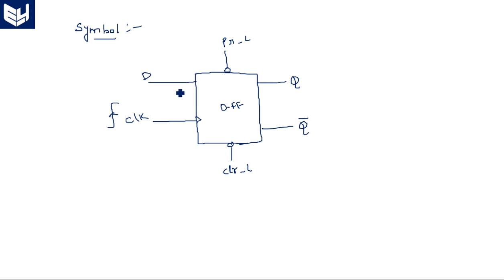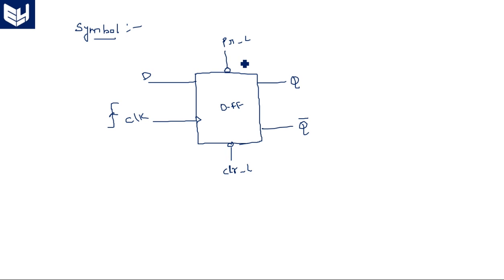Preset and clear directly control the output without any influence from the input signal or clock signal. However, both should not be activated at the same time. If both are activated simultaneously, the output enters an indeterminate state because the circuit doesn't know whether to perform presetting or clearing. If both are deactivated, then normal input-output operation based on the clock takes place.